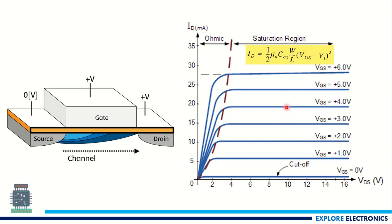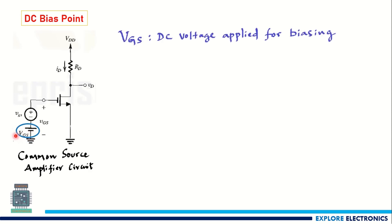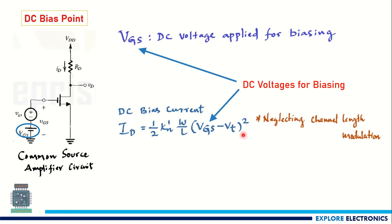Here you can see an example of a common source amplifier circuit, which I've taken to explain the DC bias point. Capital V, capital GS — this corresponds to the DC voltage applied for biasing. Capital I, capital D represents the DC current. Wherever we use capital letters, it represents DC values; small letters represent AC quantities. This expression gives the DC bias current, neglecting channel length modulation. Including channel length modulation adds the lambda parameter.